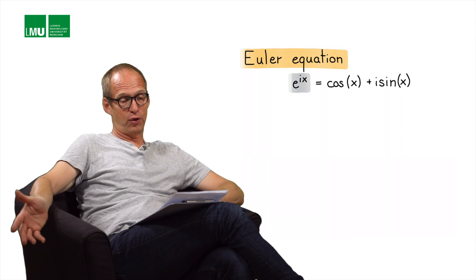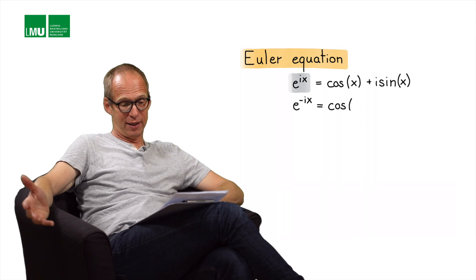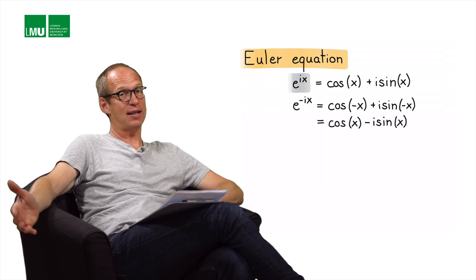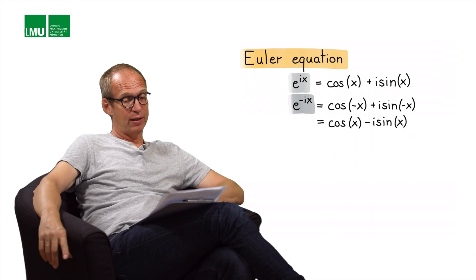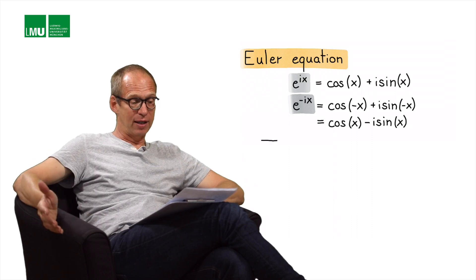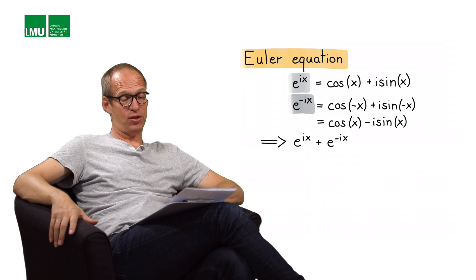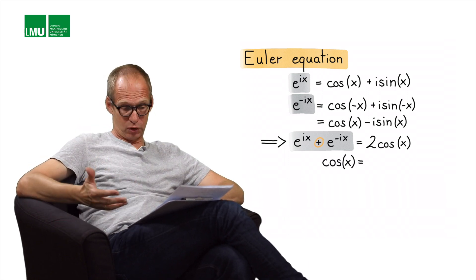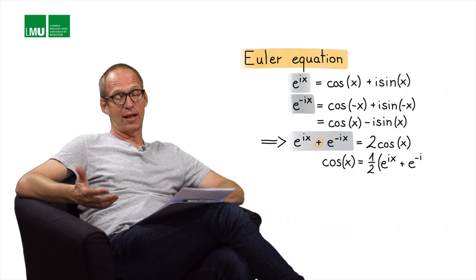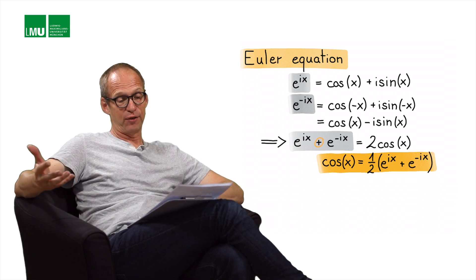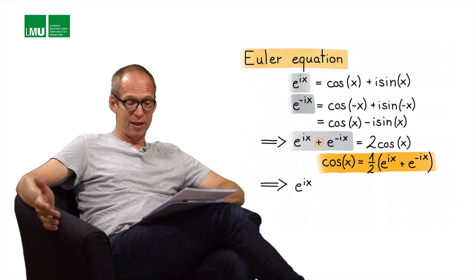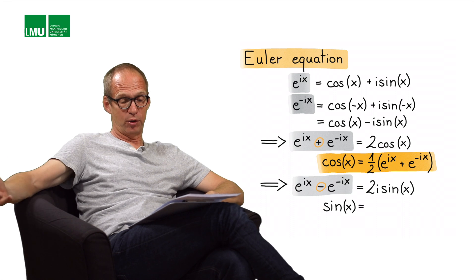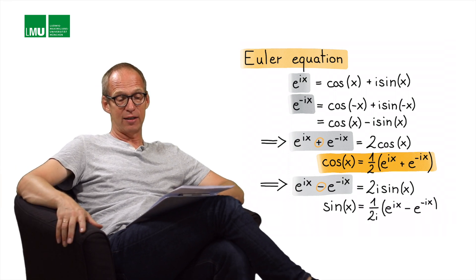Equivalently, for negative x, e to the minus ix equals cosine x minus i sine x. If you add e to the ix plus e to the minus ix, you get 2 times cosine x, so cosine x equals one-half times (e to the ix plus e to the minus ix). Similarly, e to the ix minus e to the minus ix equals 2i sine x, giving sine x equals 1 over 2i times (e to the ix minus e to the minus ix).